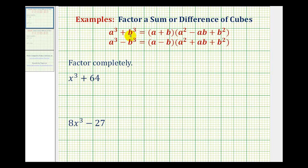Now we'll look at some examples of factoring a sum and difference of cubes. Notice both a sum and difference of cubes factors into a binomial and a trinomial. So if we have a binomial in the form of a cubed plus b cubed, notice how the first binomial factor is a plus b, and the trinomial factor is a squared minus ab plus b squared.